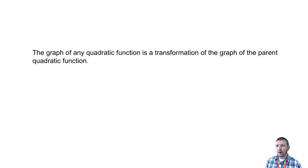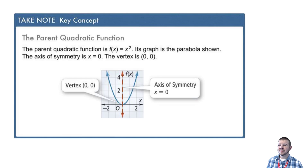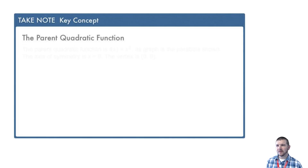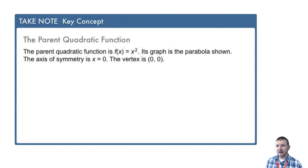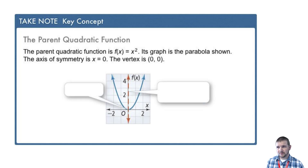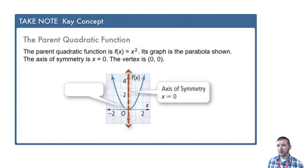The graph of any quadratic function is a transformation of the graph of the parent quadratic function. Key concept: the parent quadratic function is f of x equals x squared. Its graph is the parabola shown. The axis of symmetry is x equals 0, shown here in an orange dashed line, and the vertex is the origin, the point 0 comma 0.